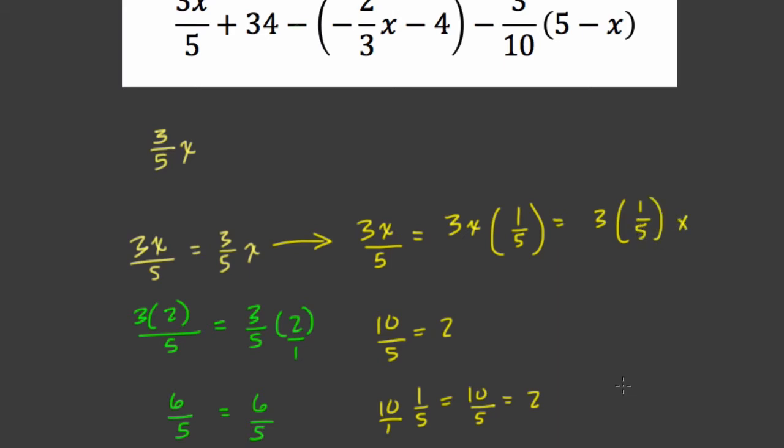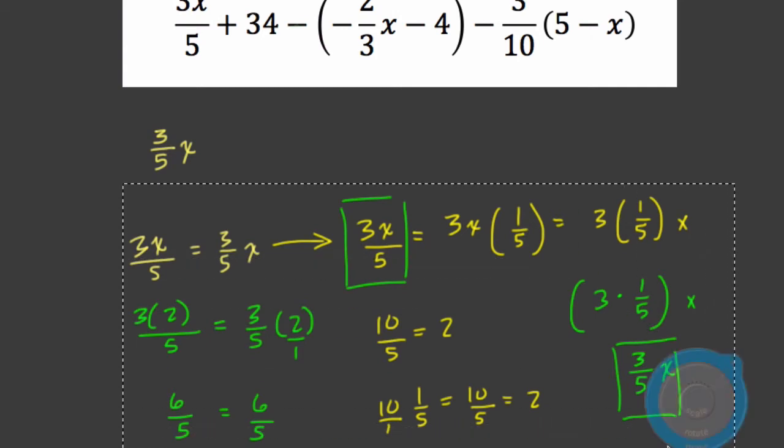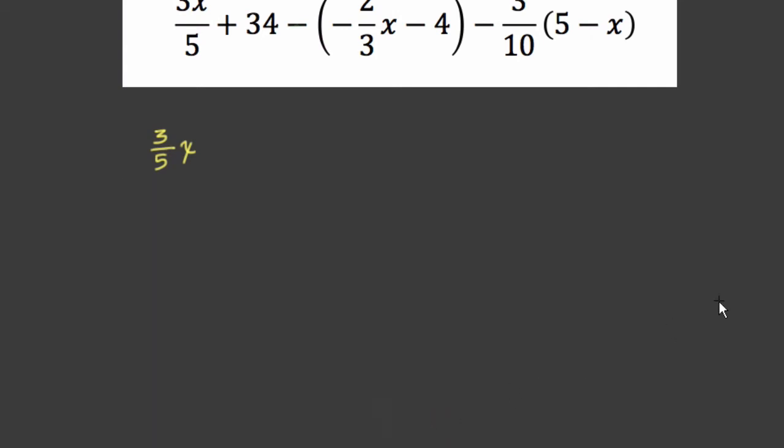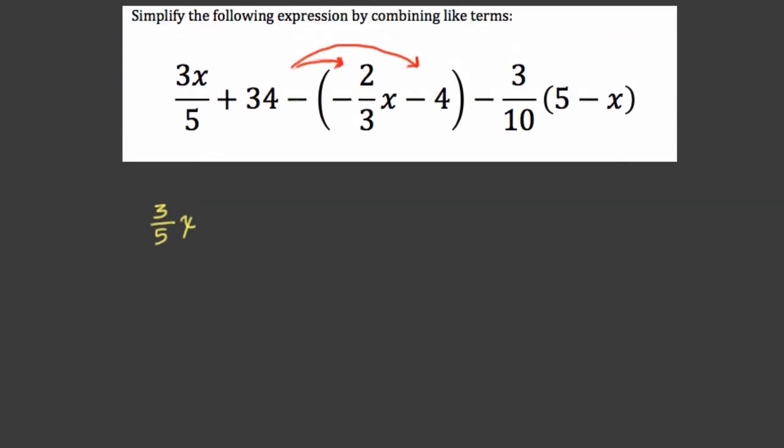And now I could associate, I could use the associative property and say, I'm going to multiply 3 by 1 fifth first, and then multiply it by x. Well, what's 3 times a fifth? That's 3 fifths times x. So think about what just happened. We started with 3x over 5, ended up with 3 fifths x. These two things are the same. Now that might not seem significant, but it really helps, I think, a lot of students solve these combining like terms problems.